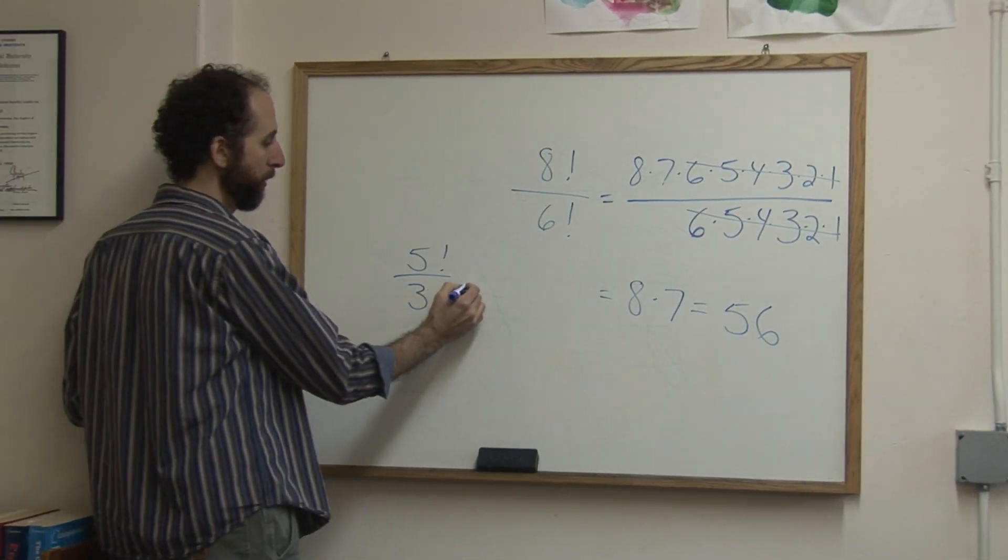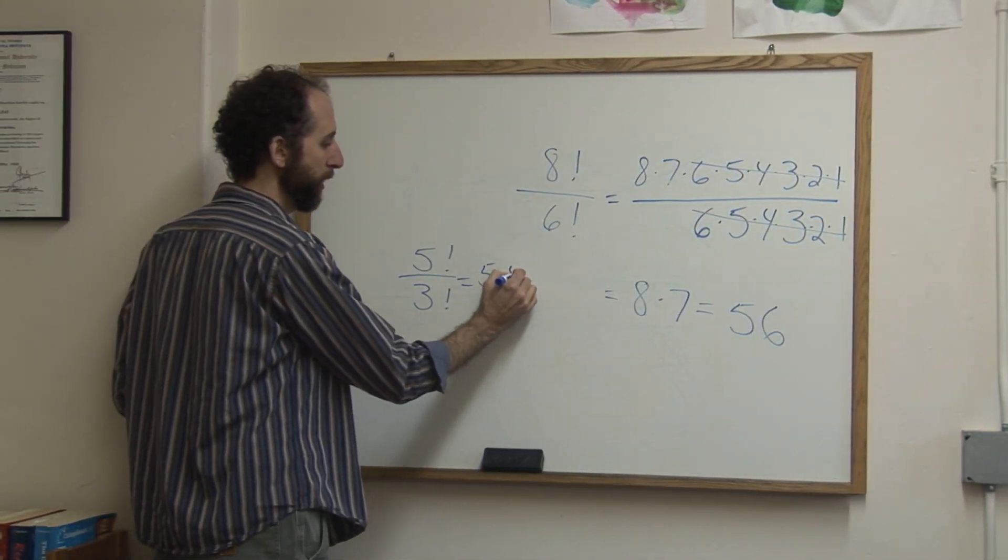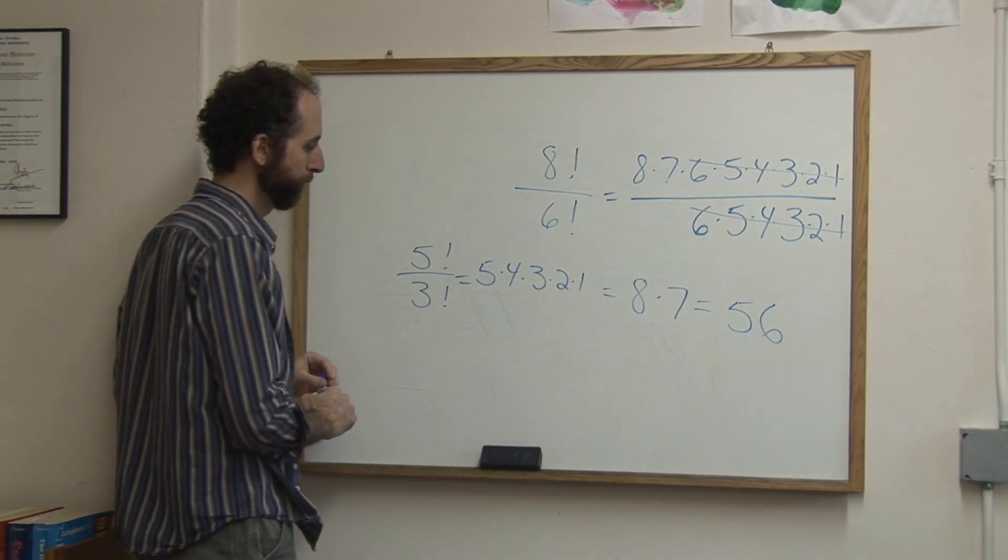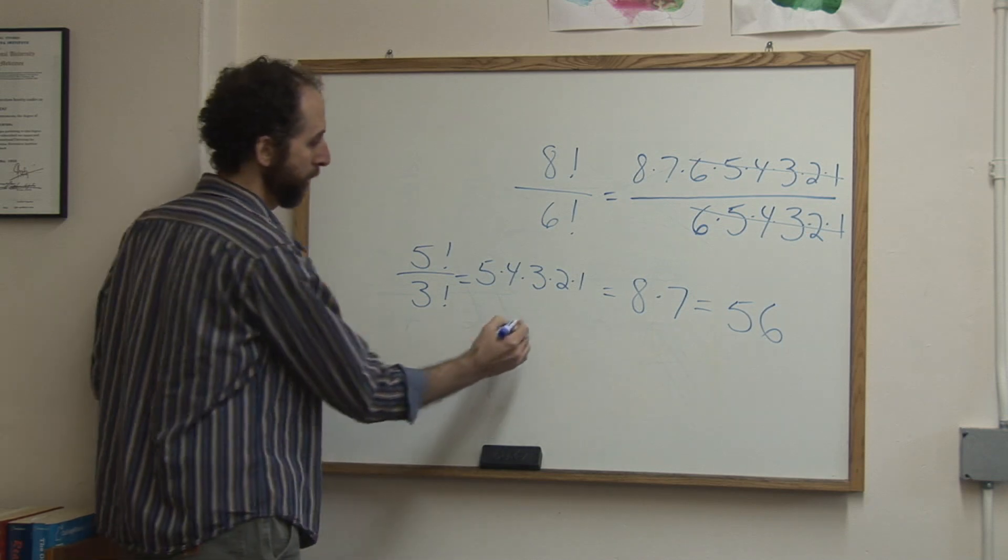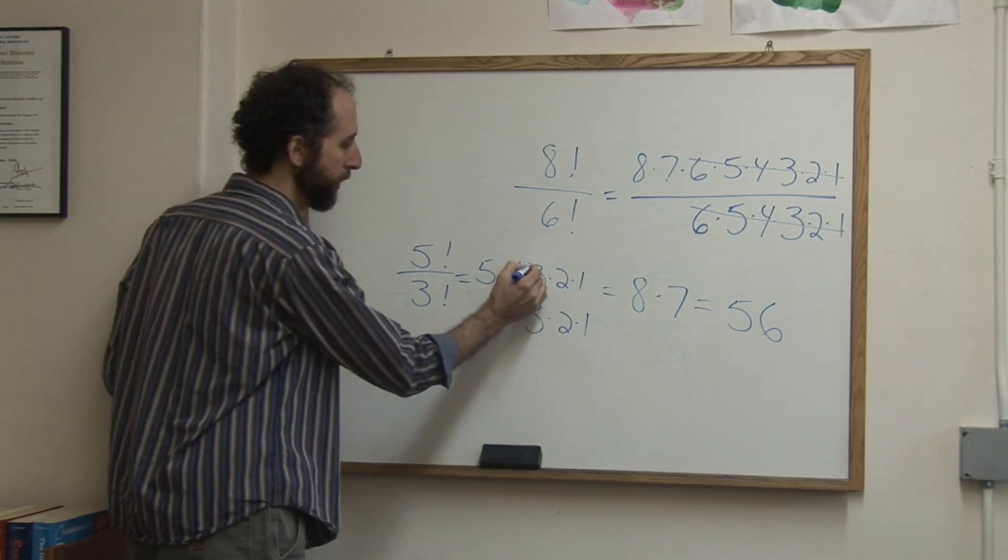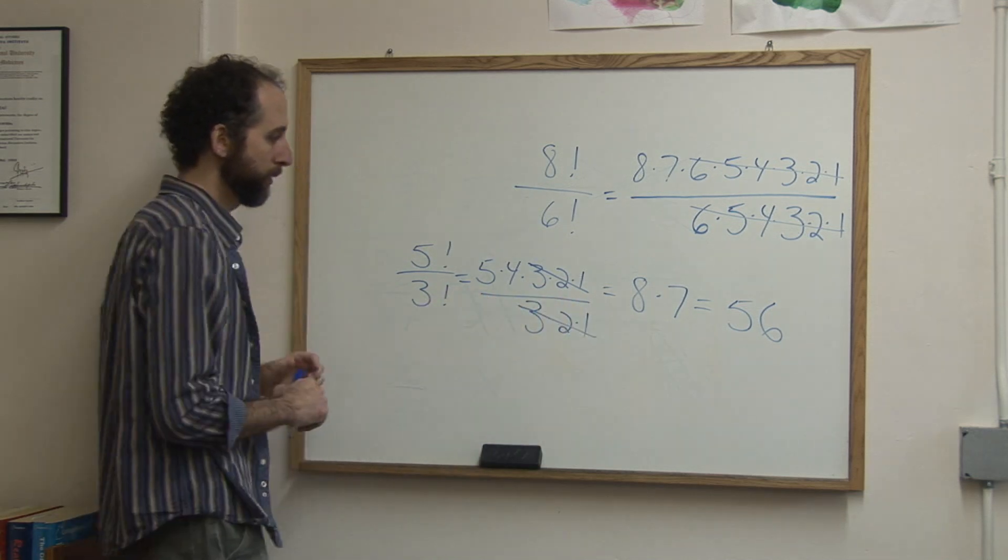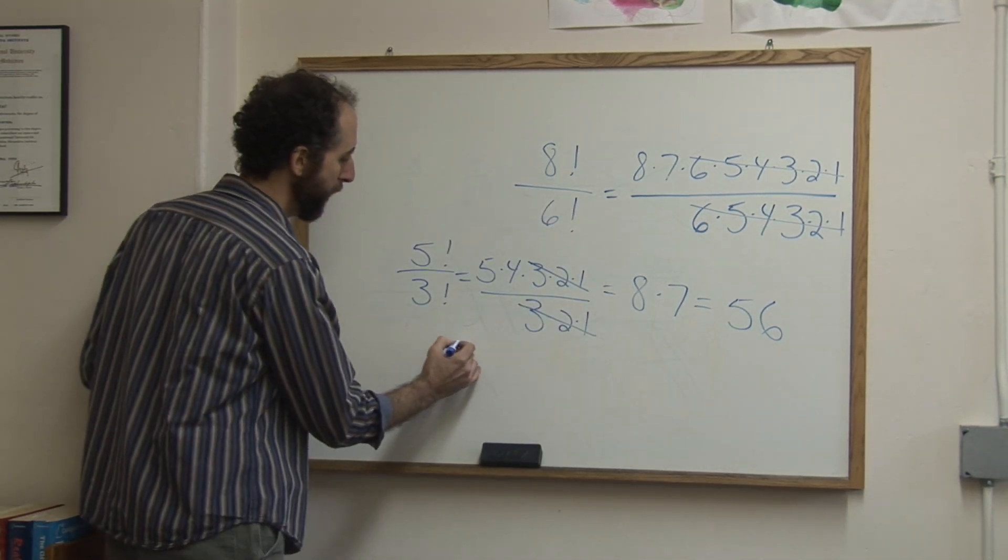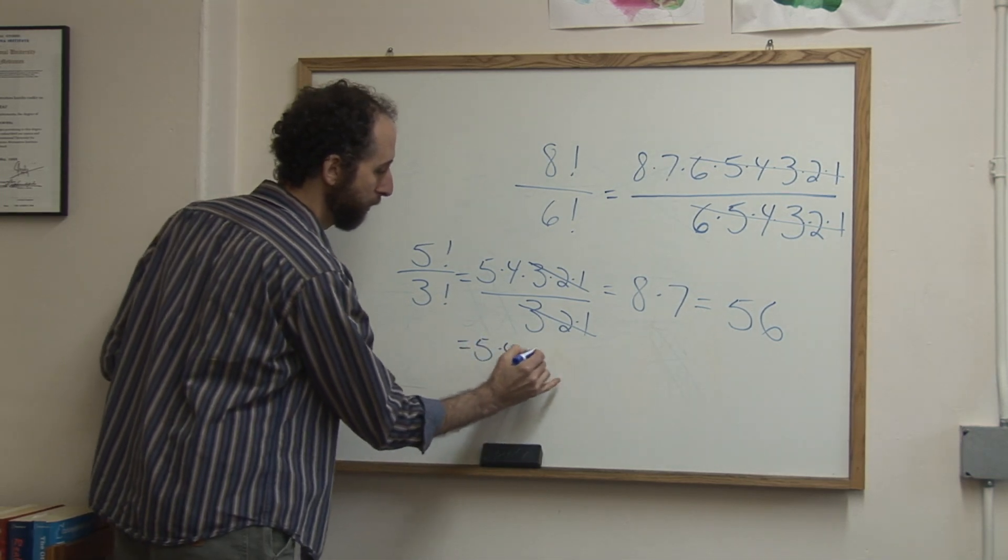It's the same thing. 5 factorial is 5 times 4 times 3 times 2 times 1. So these reduce with these, since it's a fraction and you can reduce the top and bottom, leaving me 5 times 4, which is 20.